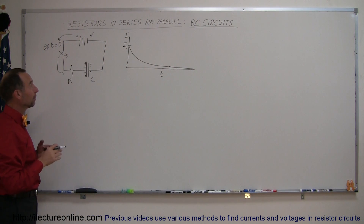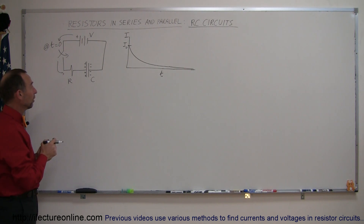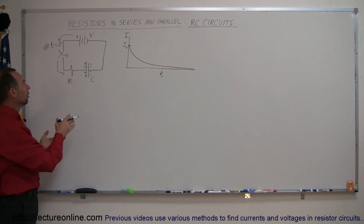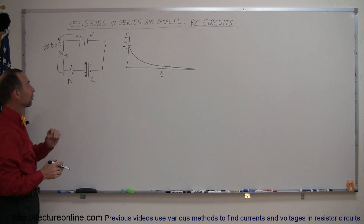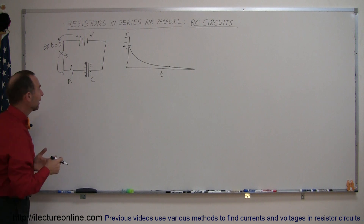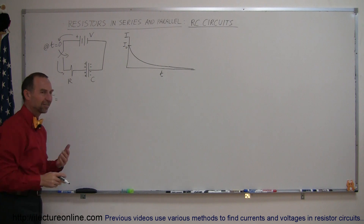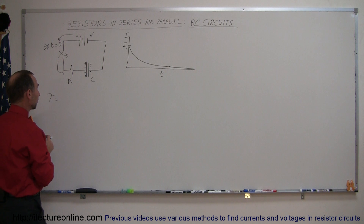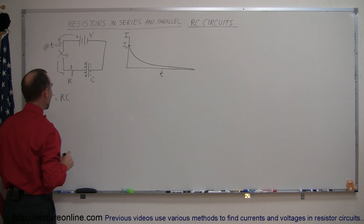How fast will that happen? That depends a lot upon the size of the capacitor — the bigger the capacitor, the longer it takes to fill it with charge — and on the size of the resistor. The bigger the resistor, the slower the current will be flowing through the circuit, and therefore the longer it will take for the capacitor to charge up. The time constant can be calculated by simply multiplying the resistance times the capacitance.